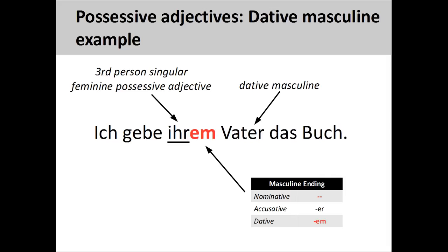Let's change the gender of the noun that is modified by the adjective. 'Ich gebe ihrem Vater das Buch' — I give the book to her father. Since the noun in this sentence is masculine and in the dative case, it must take 'em' as an ending. The root, however, stays the same, indicating a relationship between the father and the female person, his daughter.